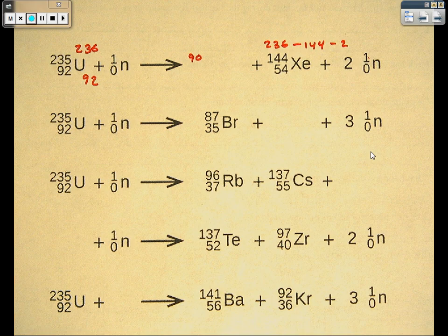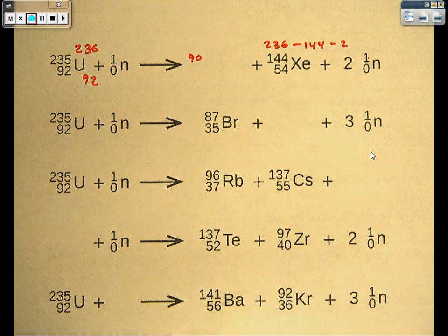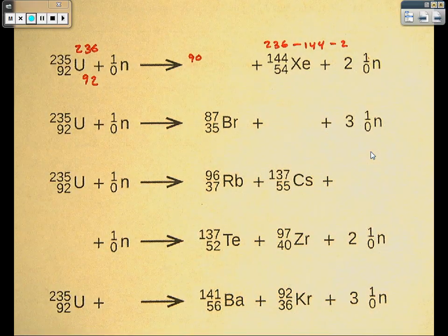So 236 minus 144 minus 2 is 90. The missing mass, the mass of our unknown substance, has to be 90 in order to keep the mass the same on both sides.